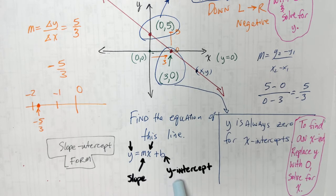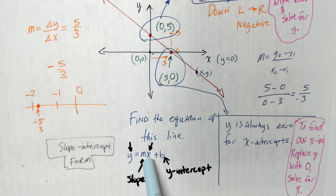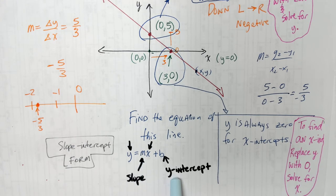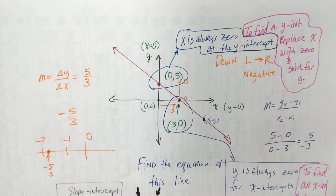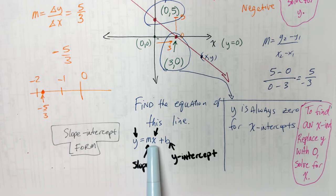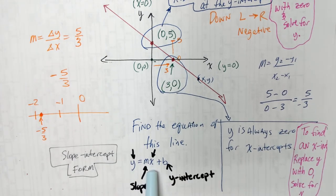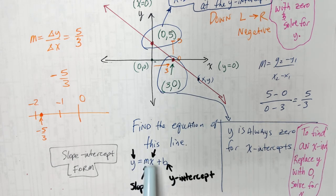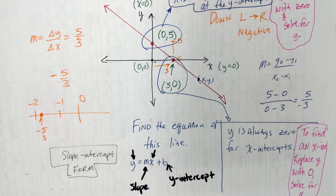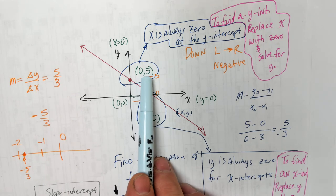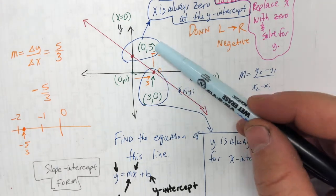The number that goes in for b is always the y-intercept. Check this out: at the y-intercept, x is always zero. If you put zero for x, zero times anything is zero — so that term is gone. You're left with y equals b. That's the y-intercept. You see this y-intercept here? Five. That five goes right there for b.